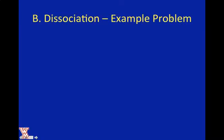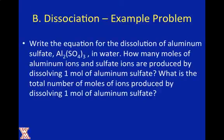What actually happens? Well, as we looked at in the previous chapter, you take NaCl solid, and it yields sodium ions plus chloride ions. Let's look at what an example problem might look like for a dissociation.